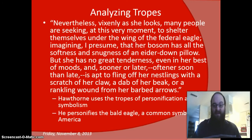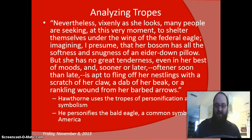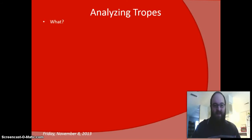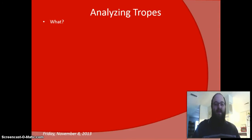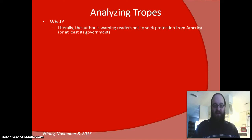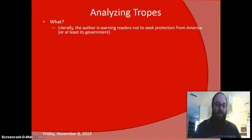He personifies the bald eagle, giving it human qualities — an eagle cannot show truculence or have moods, so there is personification. Also, the eagle is itself a symbol of America's might and independence. So let's address the what, the how, and the why. What is the author literally saying? He's warning readers not to seek protection from America, or at least its government. Remember, Hawthorne was severely annoyed about having been fired from his government job at the Port of Salem, and he's hinting that we should not think our government really protects us the way we want to believe.